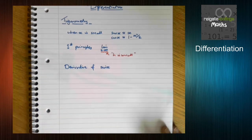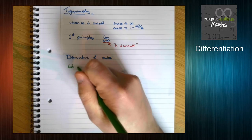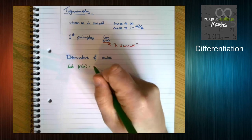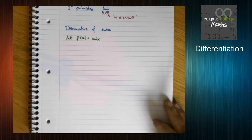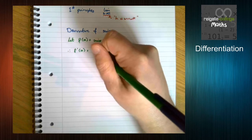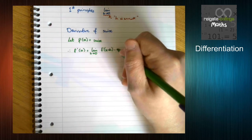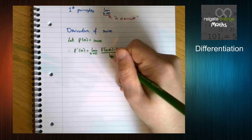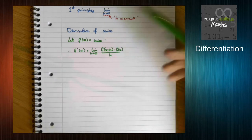We're going to do this from first principles, but once you learn the rule, you don't have to do this every time. We'll start off by letting f of x equals sine x, which means that the derivative is going to be the limit as h tends to 0 of f of x plus h minus f of x, all over h. This allows us to use the function we have in this formula.